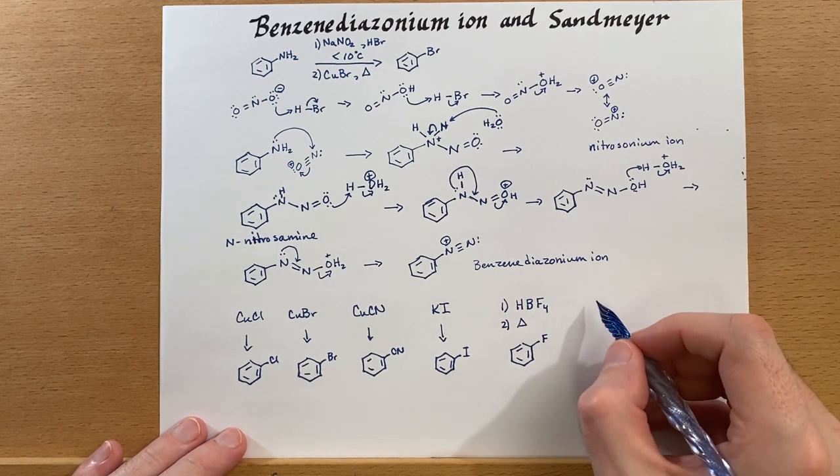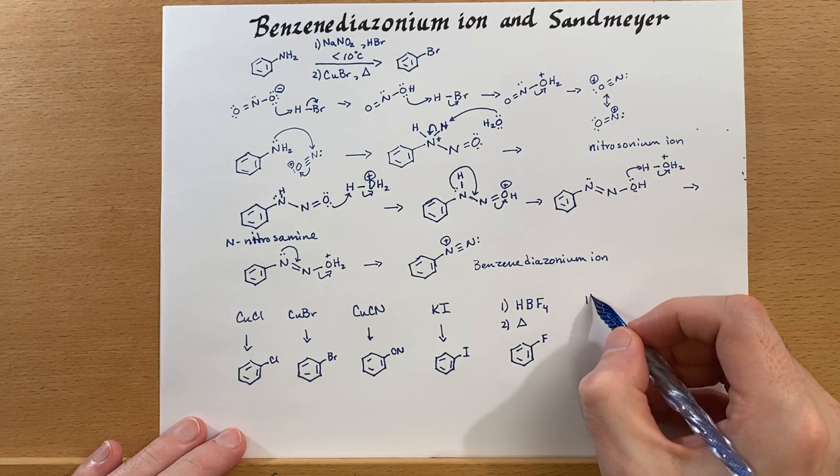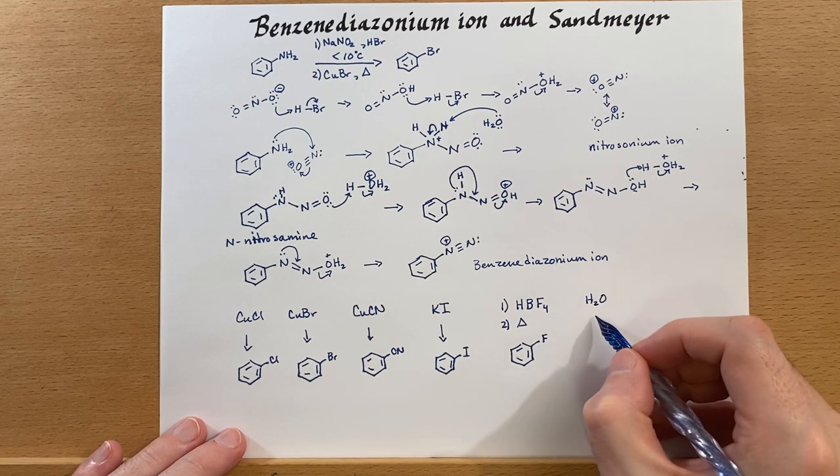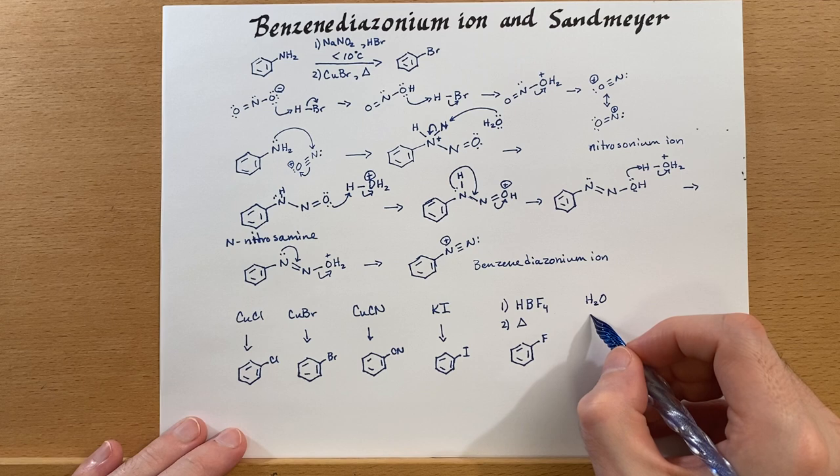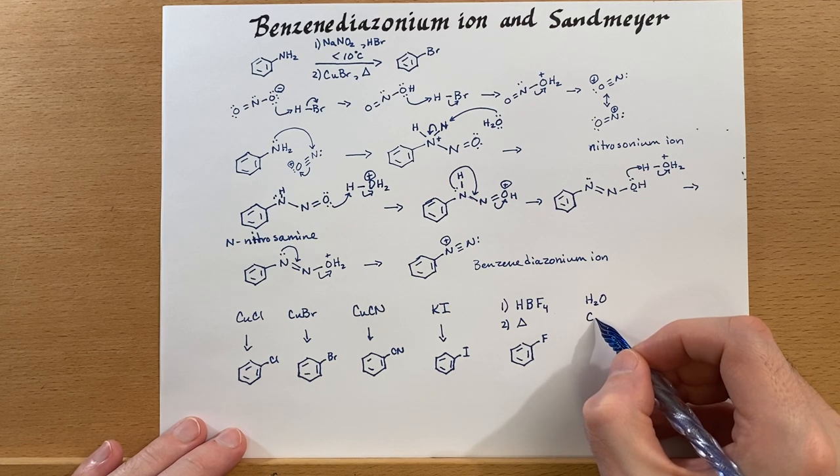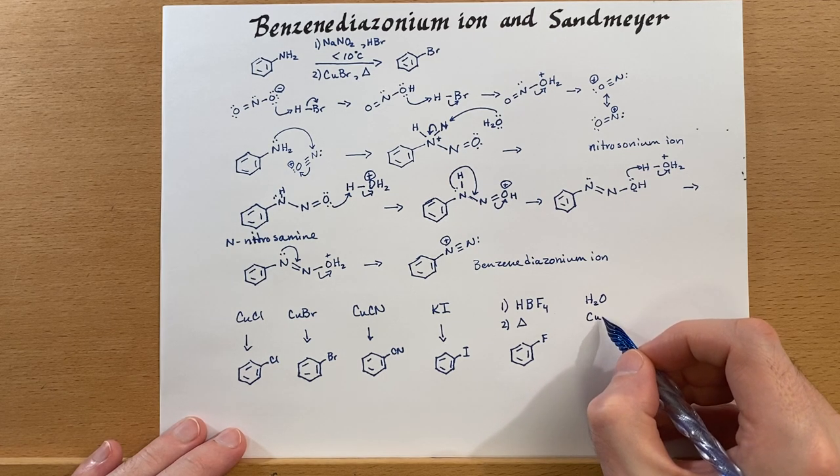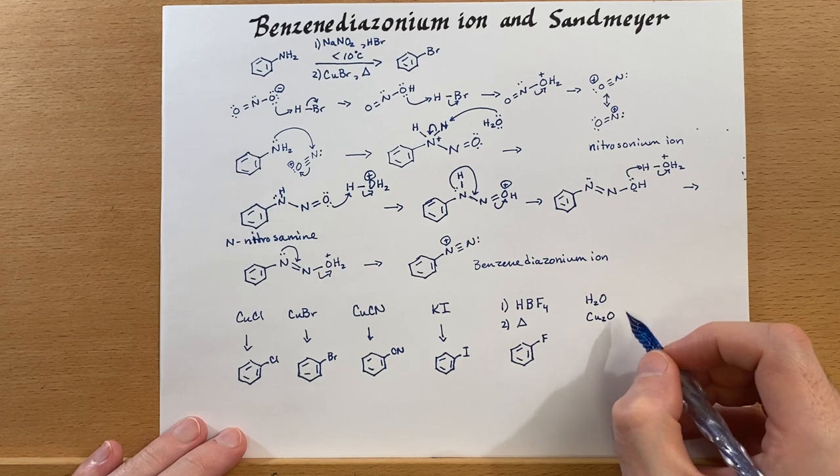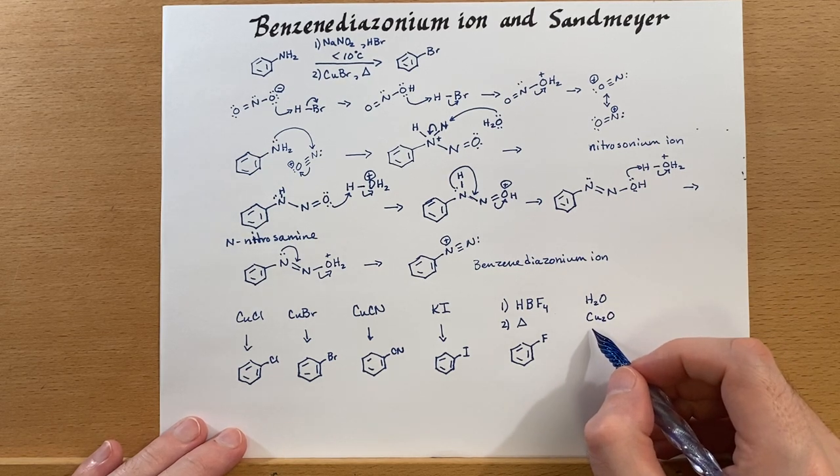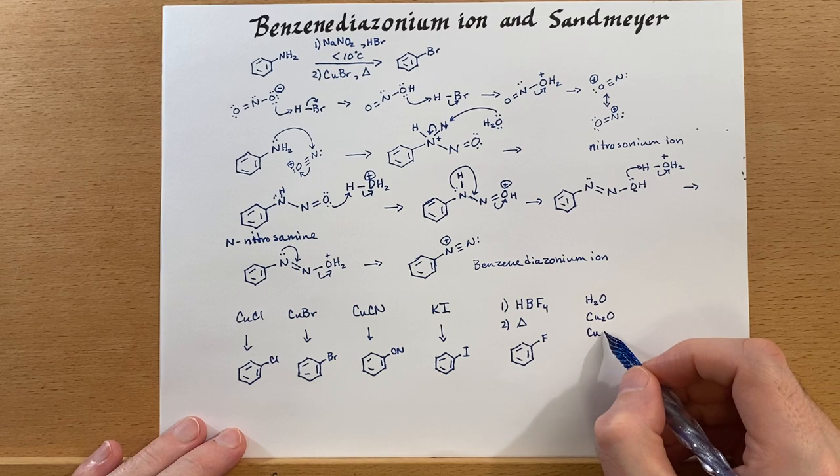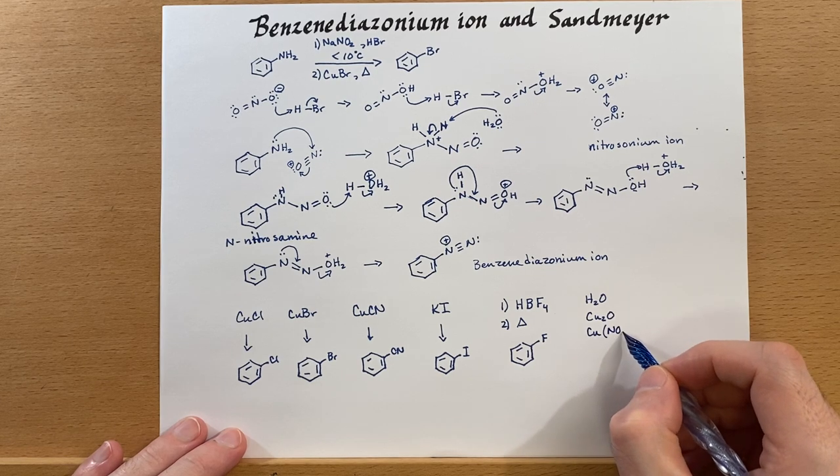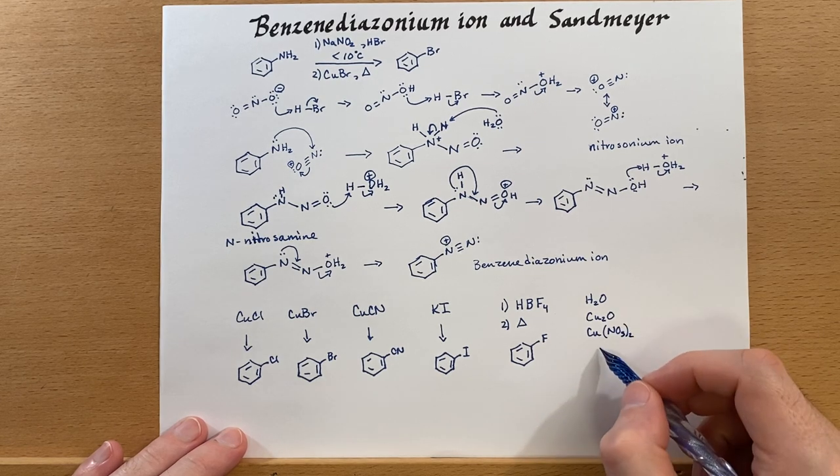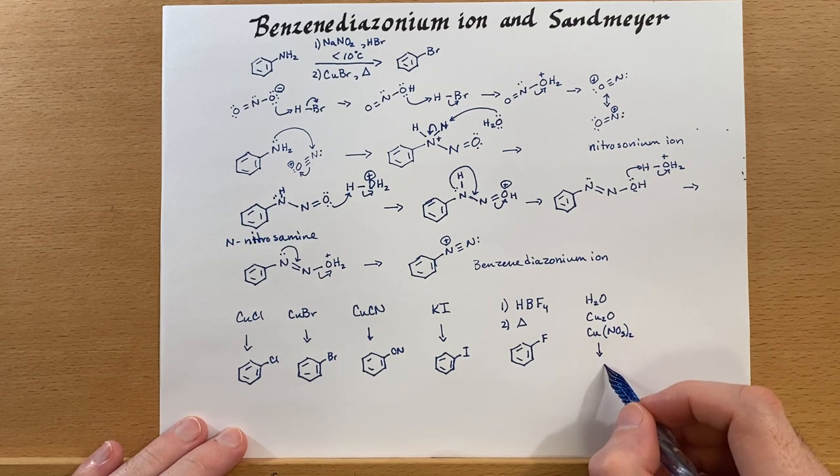We could also convert this into the phenol by adding water copper and copper one oxide and some copper two nitrate. Generate the phenol.